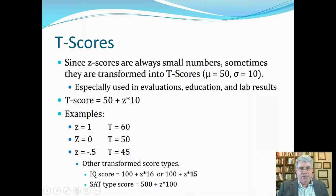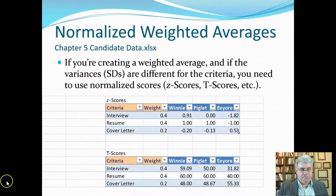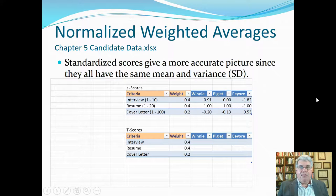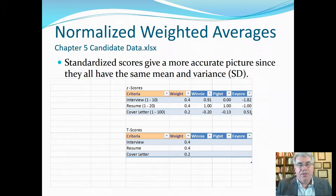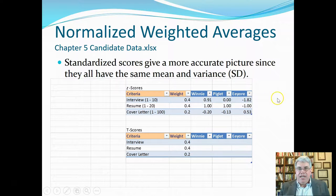Now, let's look at an example where we could use T-scores in some normalized weighted averages. When would we want to use normalized weighted averages? Let's say we've got three candidates, Winnie, Piglet, and Eeyore, and we've got three sets of scores for each candidate. The interview has been scored on a scale of 1 to 10. The resume has been scored on a scale of 1 to 20. And the cover letter has been scored on a scale of 1 to 100.